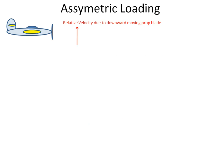This screencast will explain what happens to the aircraft when there is asymmetric loading on the propeller blades. Assuming an aircraft travelling straight and level, it will have a relative velocity due to the rotational speed of the prop, and a relative velocity due to the aircraft's airspeed — together these give us the actual relative velocity which the propeller sees.